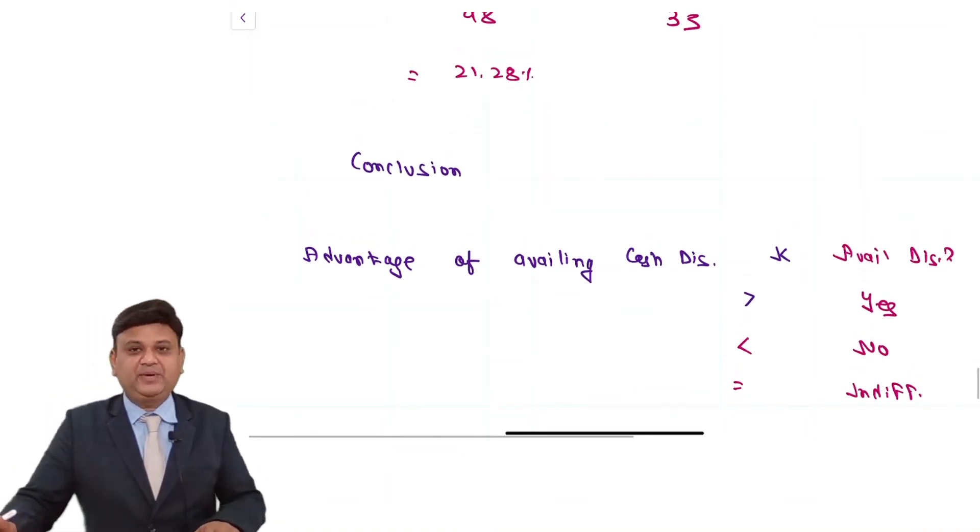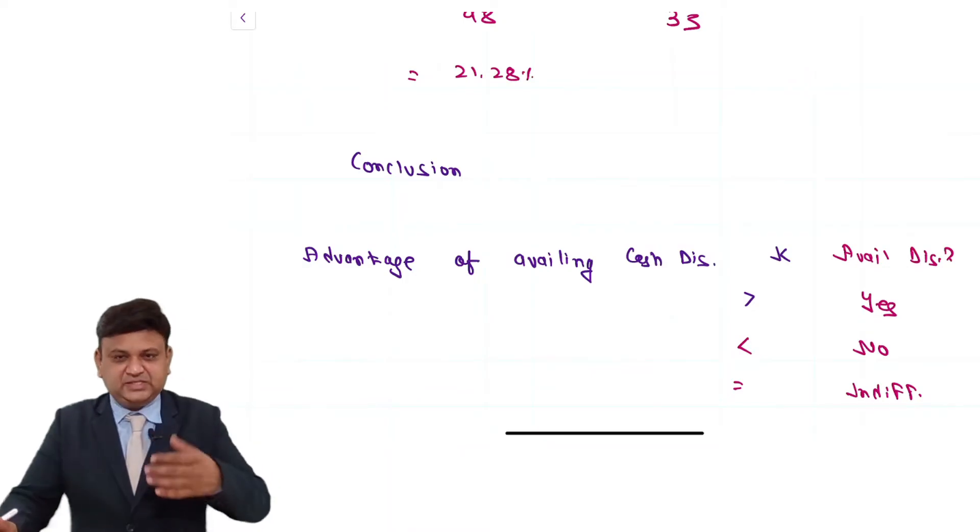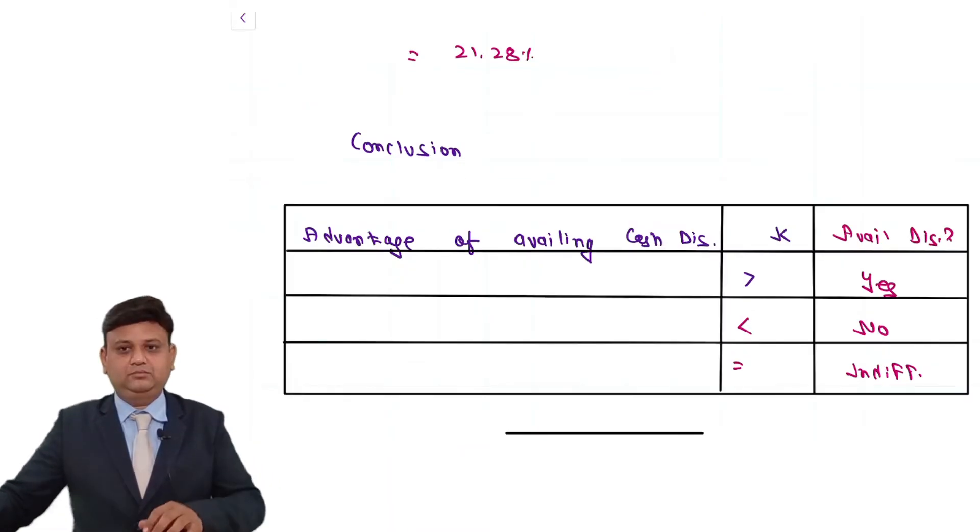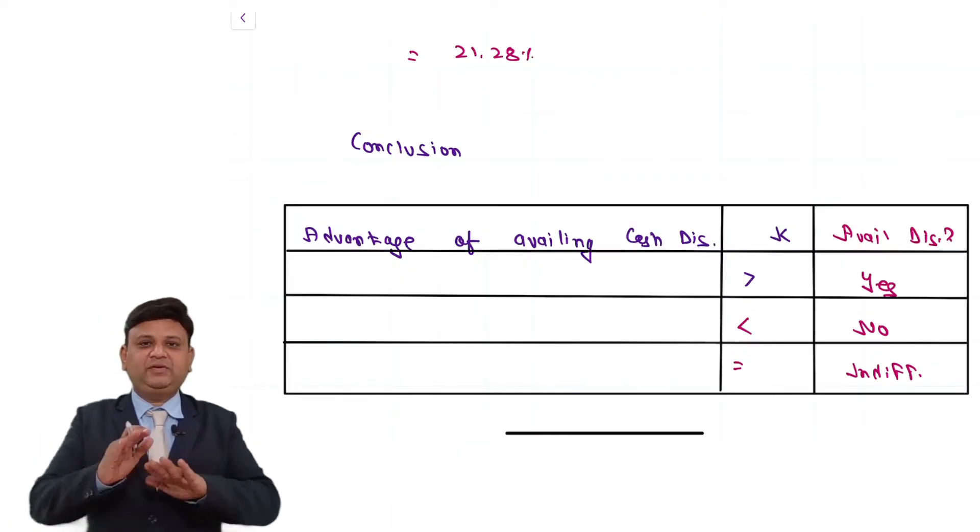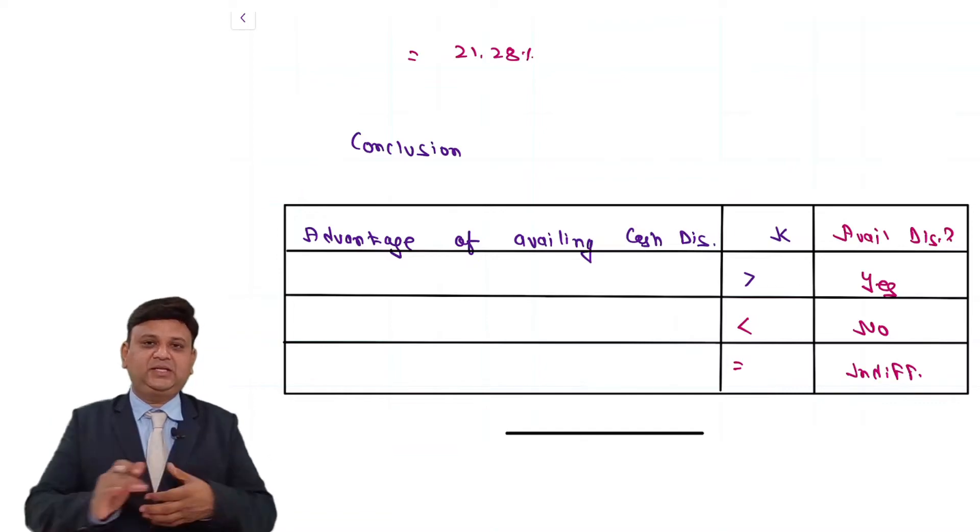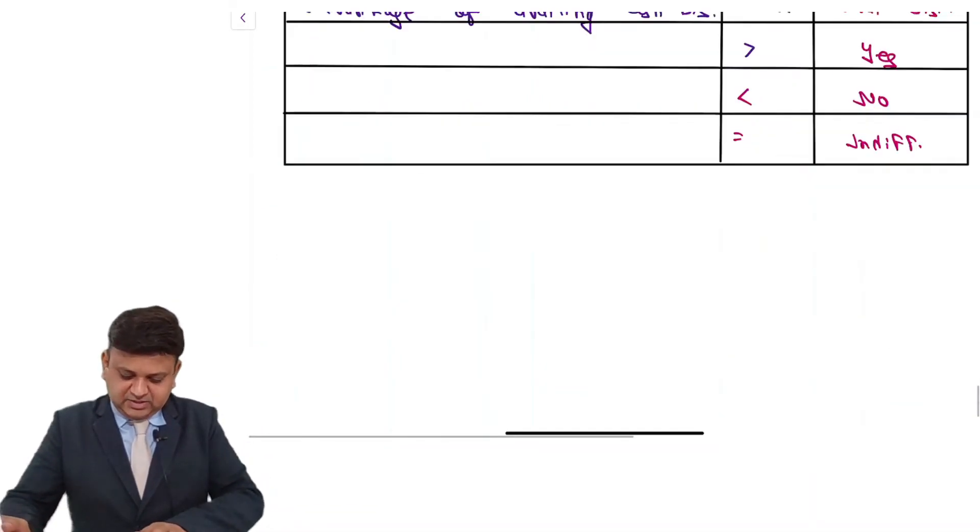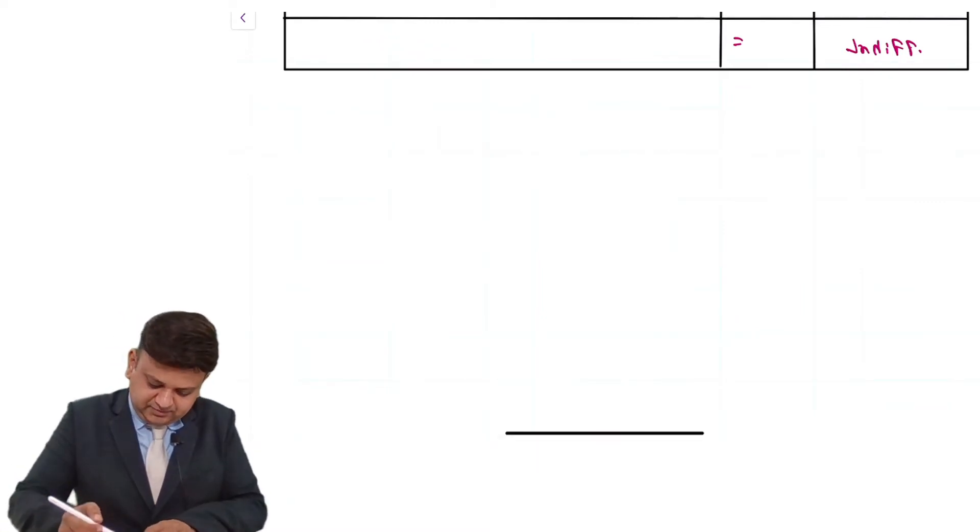To aisa karke humko yahan pe complete question likhna hai. Please write down your answer. So this is the way we are required to give an open-ended answer with respect to the decision about availing the discount. Write down your note for the answer.